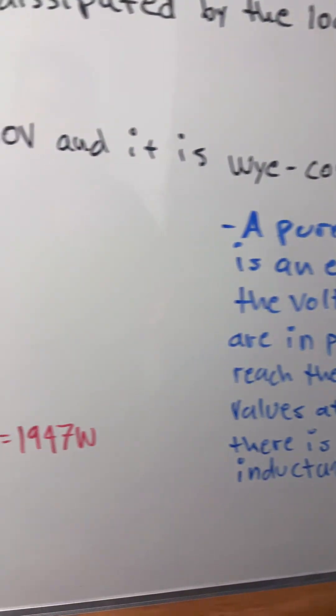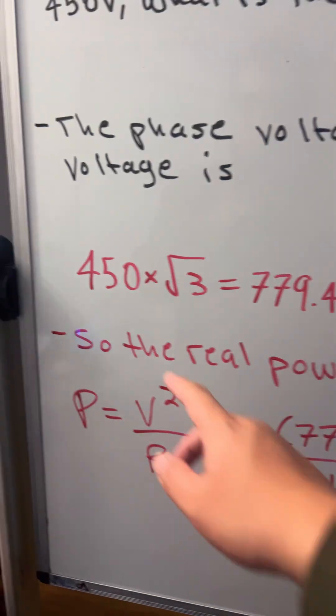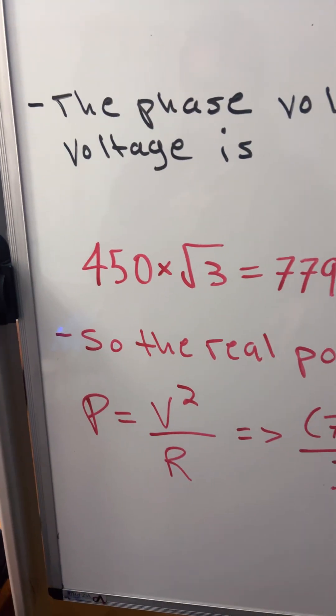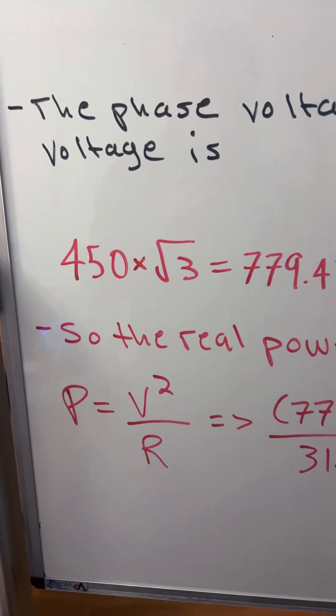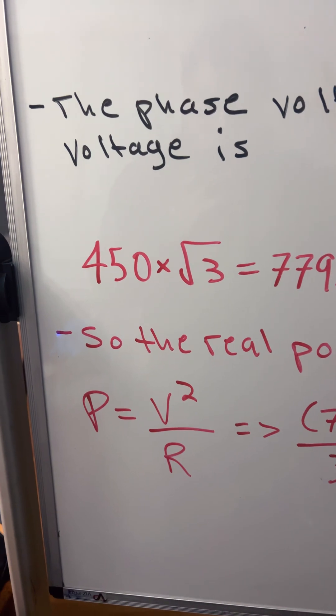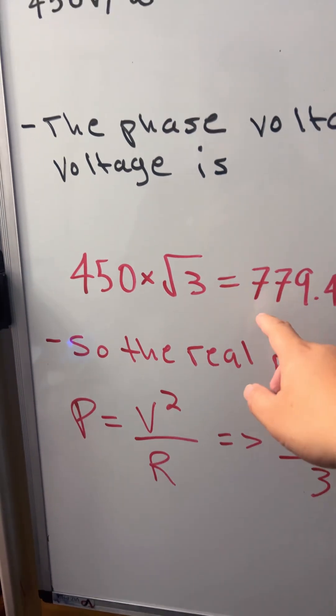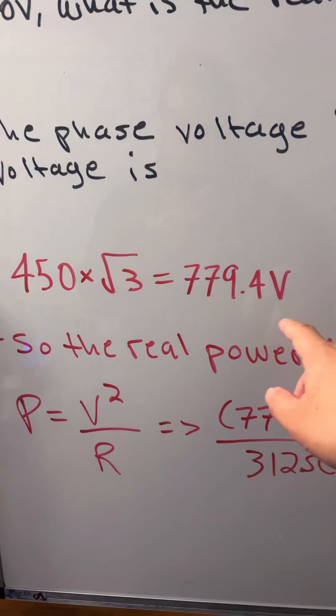Okay, back to the calculation. So we have 450 volts. It's a three phase, so we're going to do the square root of 3. So that will give us 779.4 volts.